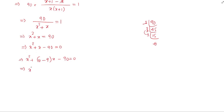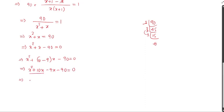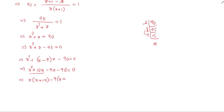We split the middle term as 10 minus 9, since 10 minus 9 equals 1. So we have x squared plus 10x minus 9x minus 90 equals 0. Taking x as common from the first two terms gives x times x plus 10. Taking 9 as common from the last two terms, with sign reversal, gives 9 times x plus 10. So we get the factored form x plus 10 equals 0.